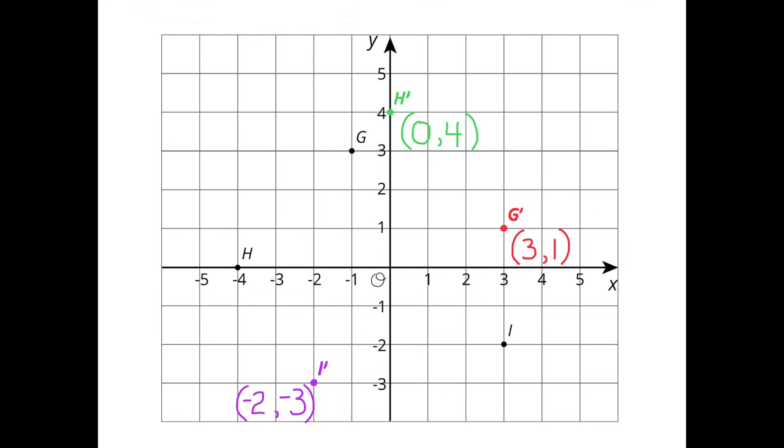After the rotation, the coordinates for G' are 3 and 1. And after the rotation of H, the H' coordinates are 0 and 4. And after the rotation of I, the I' coordinates are negative 2 and negative 3.